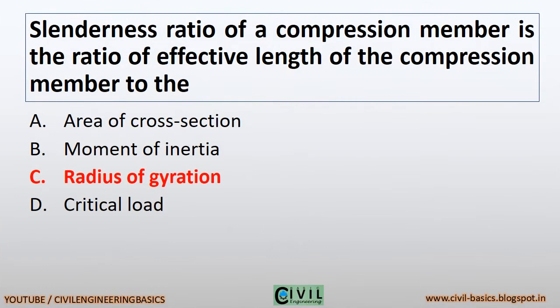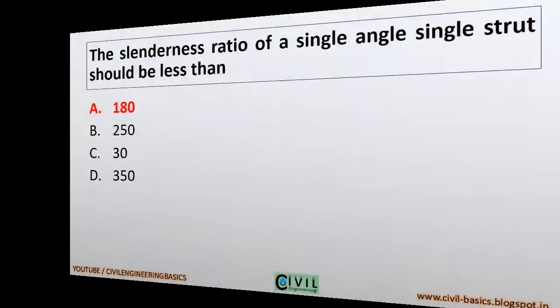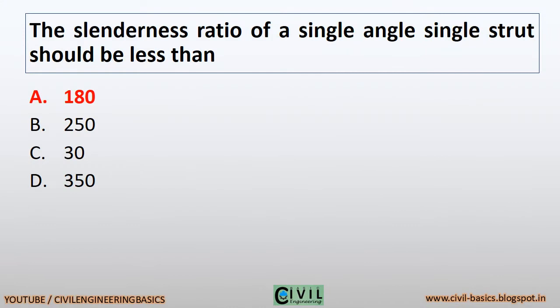Slenderness ratio of a compression member is the ratio of effective length of the compression member to the radius of gyration of that member. The slenderness ratio of a single angle strut should be less than 180.